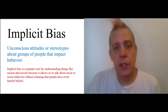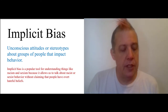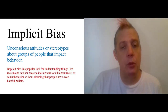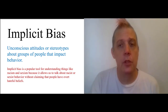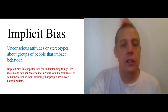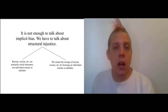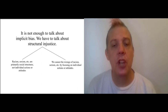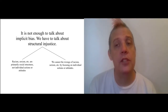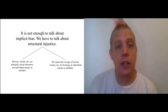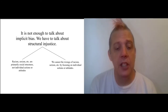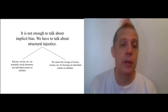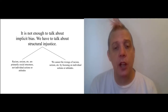Talking about implicit bias is good — it enables us to identify a mechanism by which individuals wind up causing harm to other individuals. But Haslinger's basic thesis is that it is not enough to talk about implicit bias. We also have to talk about structural injustice, which was the key concept in Iris Marion Young. We can continue to think about structural injustice as injustice caused by social structures that many people participate in.